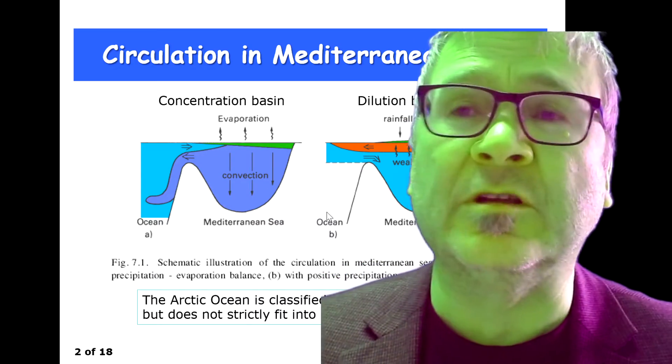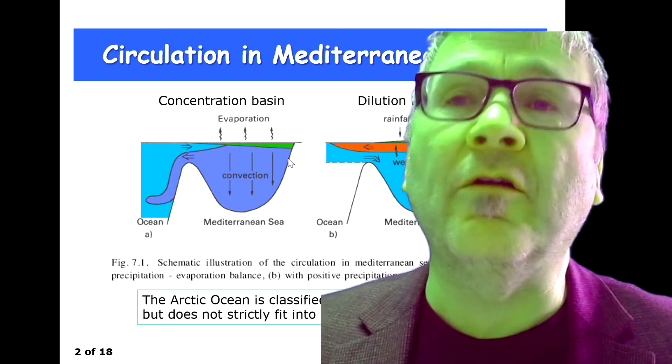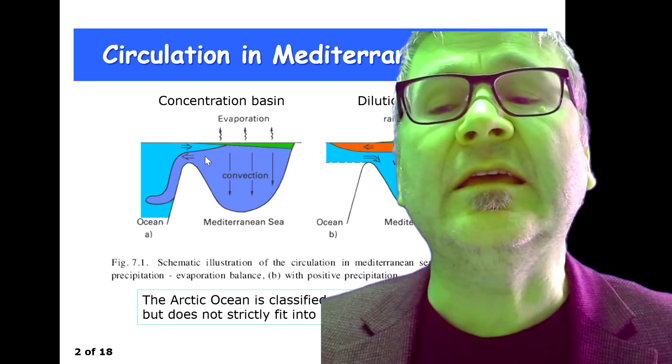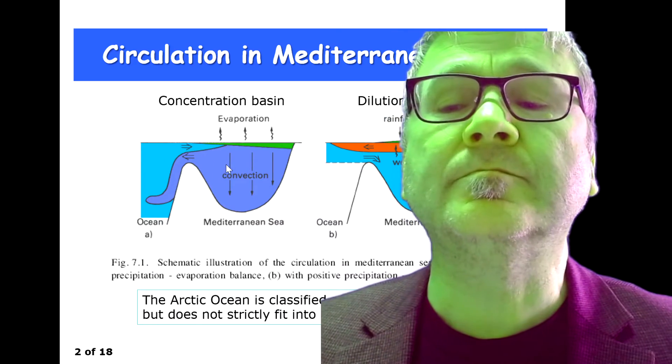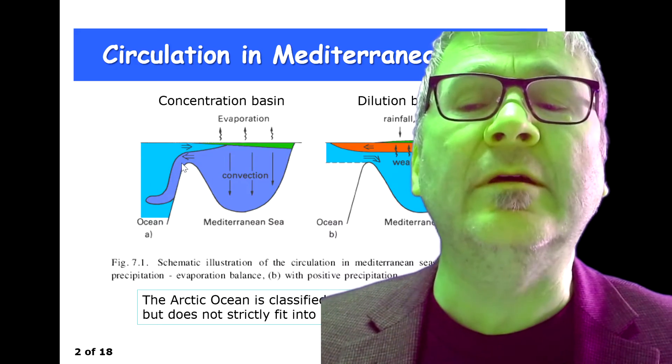So you have the creation of deep water which is heavier, has a high density. This triggers an outflow of this denser water across the sill into the ambient ocean—an outflow of deeper water.